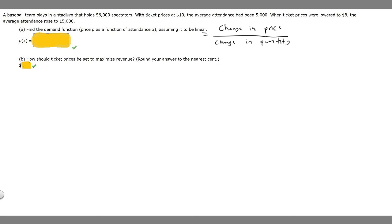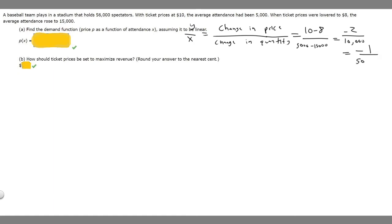You can also think of this as just y over x. So let's find this value. The change in price goes from $10 to $8, so that's $10 minus $8. And the change in attendance goes from 5,000 to 15,000, so 5,000 minus 15,000. That gives us negative 2 over 10,000, which equals negative 1 over 5,000. This is the slope of our demand function.